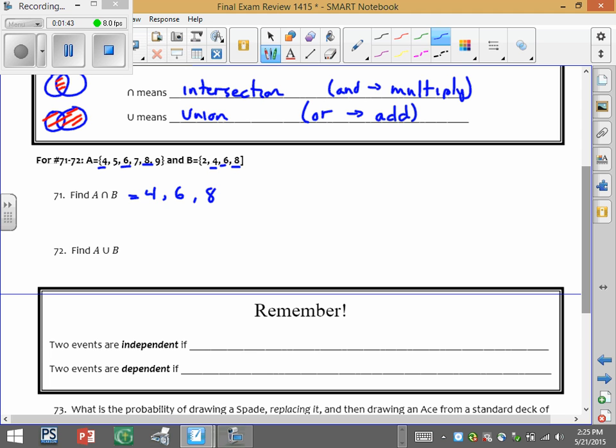So the intersection would be 4, 6, and 8. The union, let's just write everything they have together. So you don't have to repeat. So they have 2, 4, 5, 6, 7, 8, and 9.